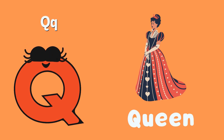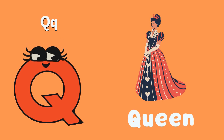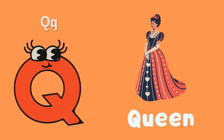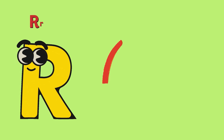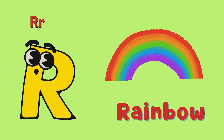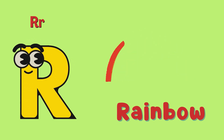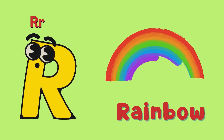Q is for Queen, k-k-Queen, Q. Queen. R is for Rainbow, r-r-Rainbow.